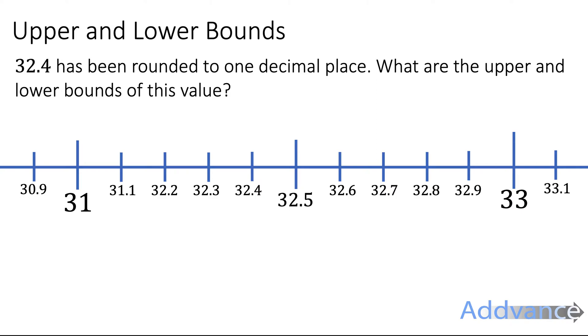Let's look at a number line first and think about how we round numbers. 32.4 has been rounded to one decimal place. What are the upper and lower bounds of this value? So we're thinking about before it was rounded, what could that number possibly have been?